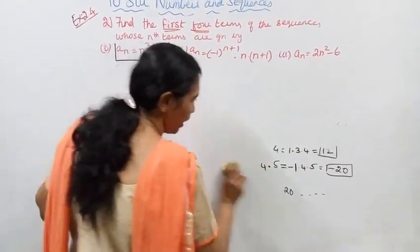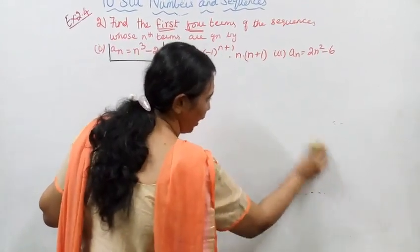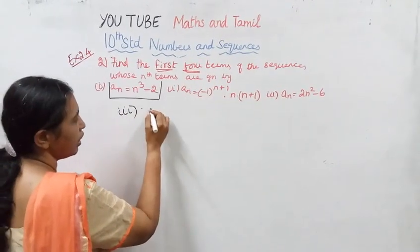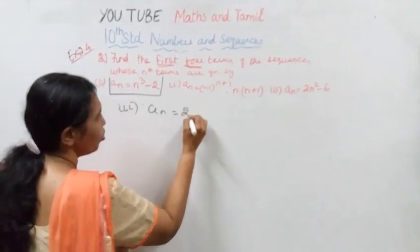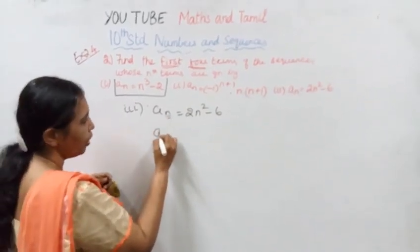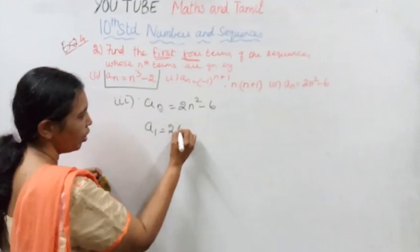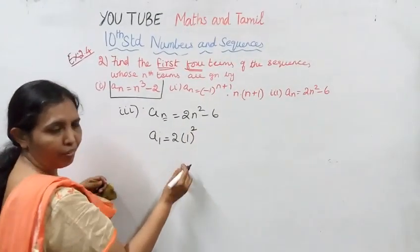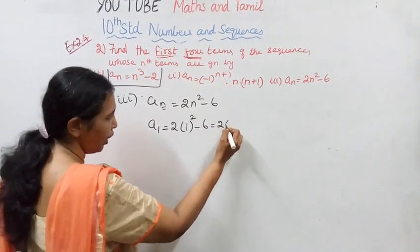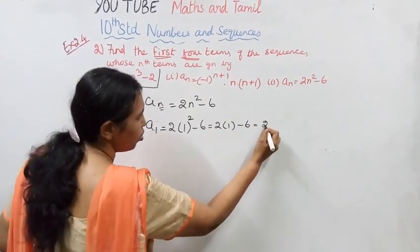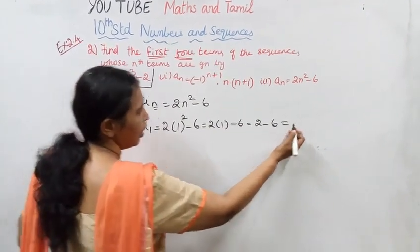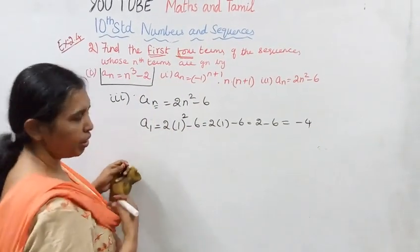Third subdivision: a_n equals 2n square minus 6. For n equals 1: 2 into 1 square equals 2, minus 6 equals minus 4.